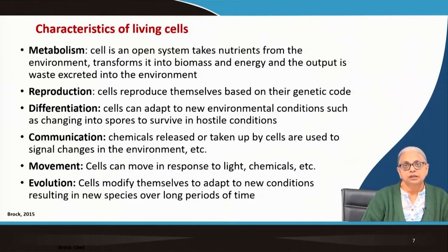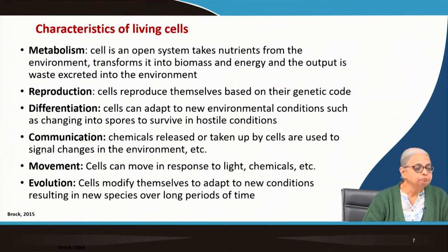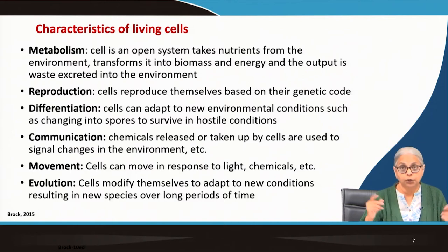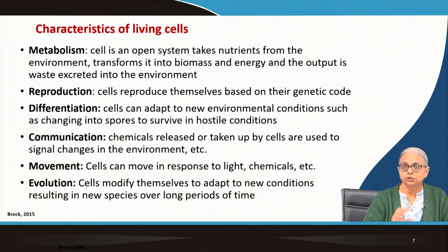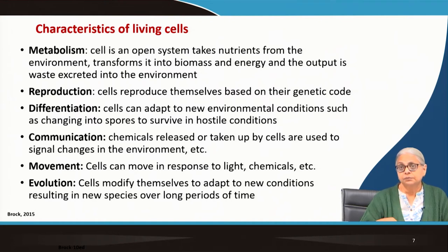How do we define whether a cell is living or non-living? The textbook gives six characteristics that define a living cell. The first is metabolism — is the cell capable of deriving both mass and energy for itself, taking up nutrients from the environment, transforming them into biomass and energy, and excreting what is not required? The second is reproduction — cells must be able to reproduce themselves based on their own genetic code. The third is differentiation — cells need to adapt themselves to new environmental conditions.